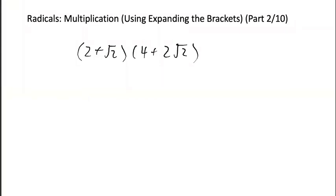Radicals: multiplication using expanding the brackets, part two. So in here, immediately what comes to mind is FOIL – first, outer, inner, last.